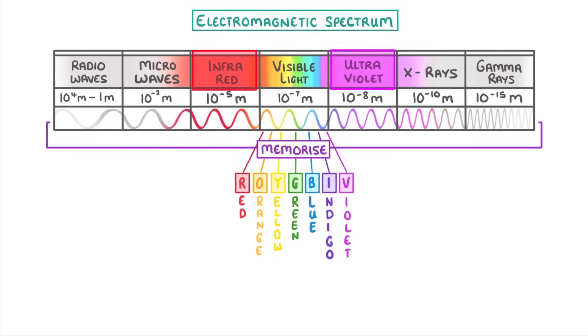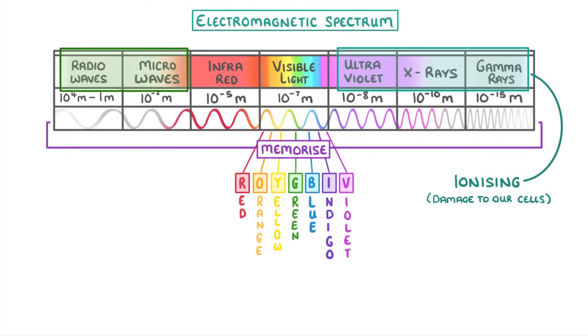To help you remember that x-rays and gamma rays are over on the right, remember that all of these types—ultraviolet, x-ray, and gamma—can all be ionizing and cause damage to our cells, so they're grouped together. Then all we have left are microwaves and radio waves, which are both used in communication and go on the far left.